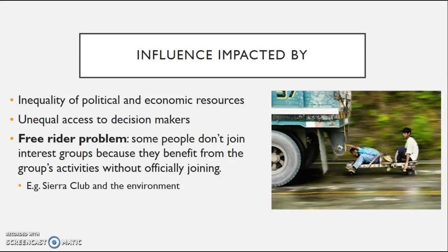Their influence is not going to be equal. There is undoubtedly an inequality of political and economic resources. You're not going to have equal access to the decision makers, such as politicians. You also have issues with the free rider problem — you want people to join your interest group, but sometimes they don't. For example, if you're the Sierra Club promoting clean air, and someone didn't donate but the Sierra Club gets clean air legislation passed, everybody benefits — including the people who did not pay. They are free riders.